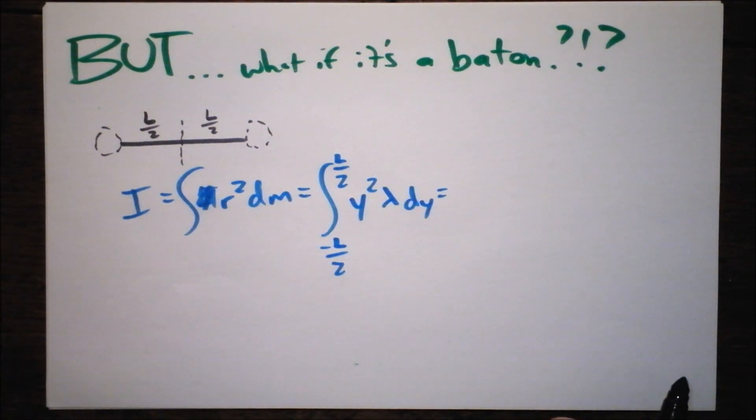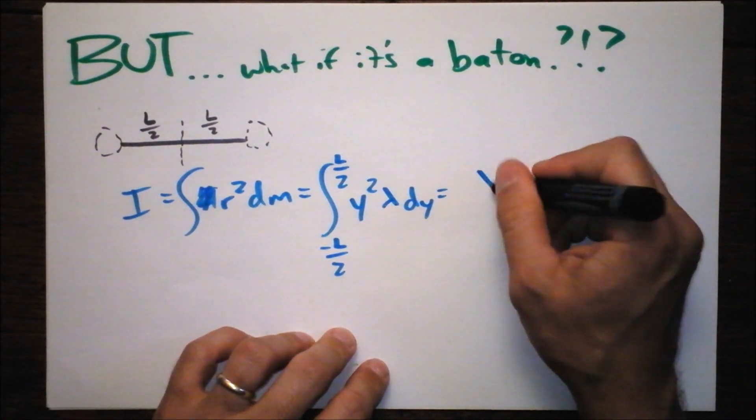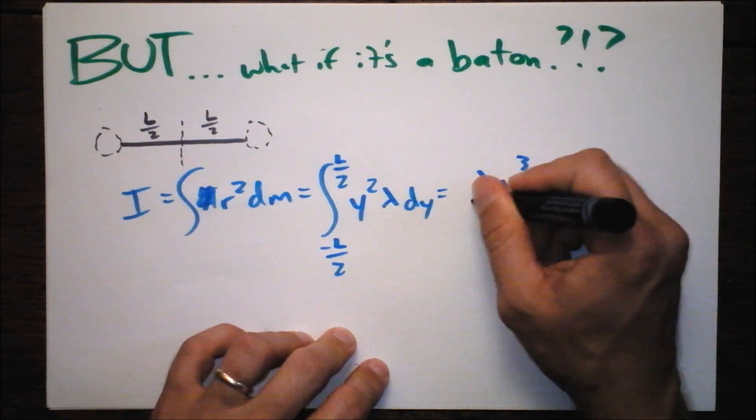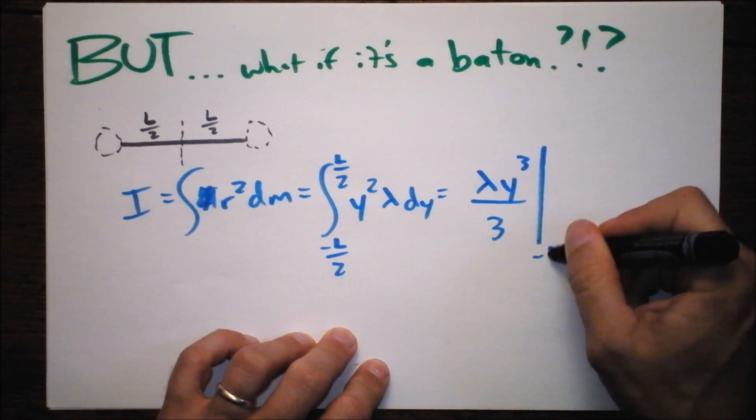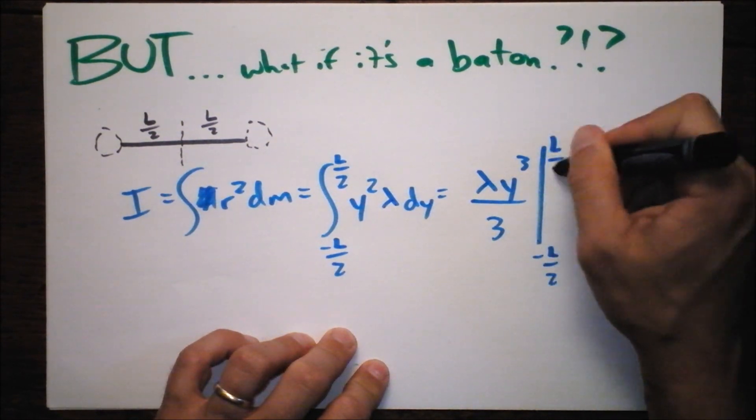And we can pull out all of that stuff and we get the same thing: lambda Y cubed over three. I like writing it like that because those are pretty. And then we go negative L over two and L over two.